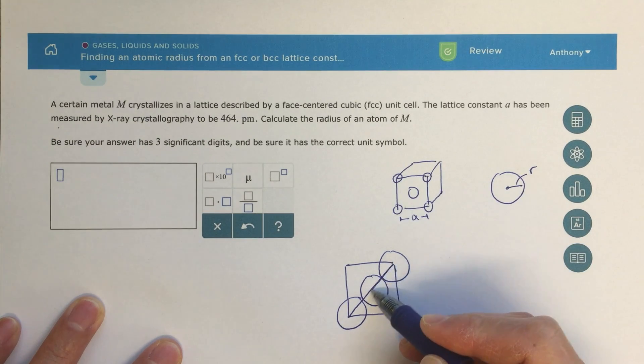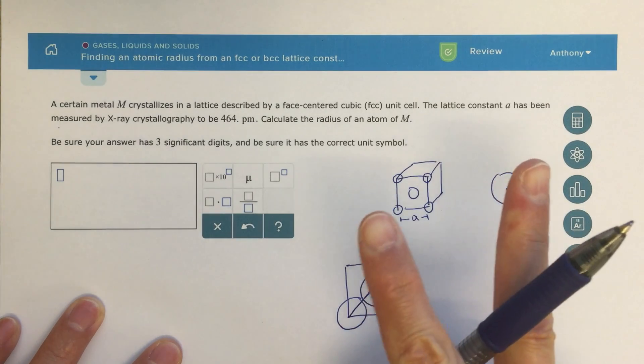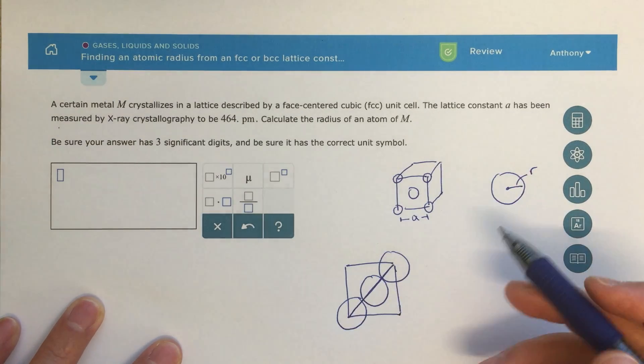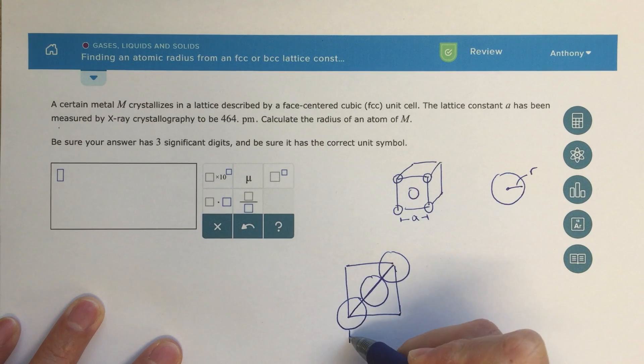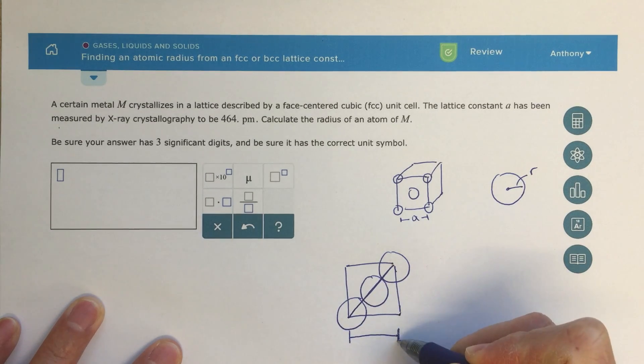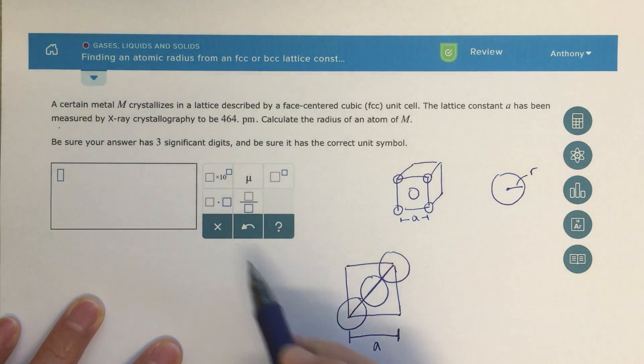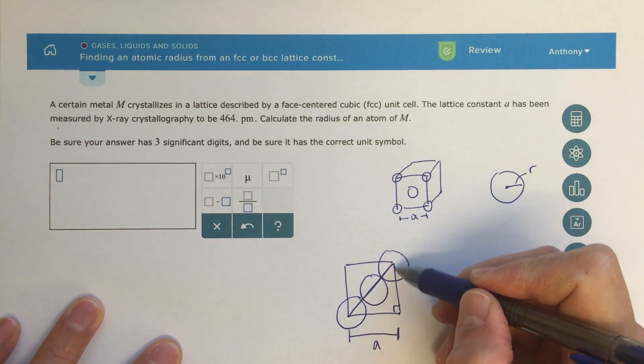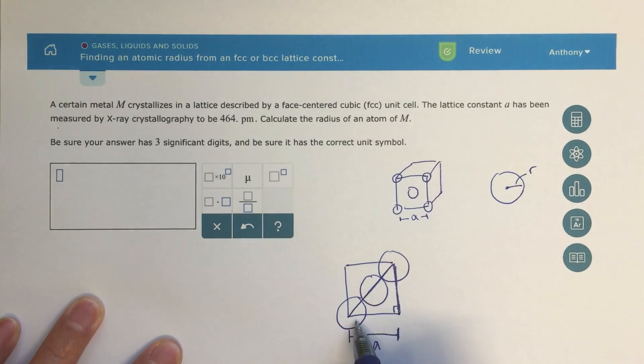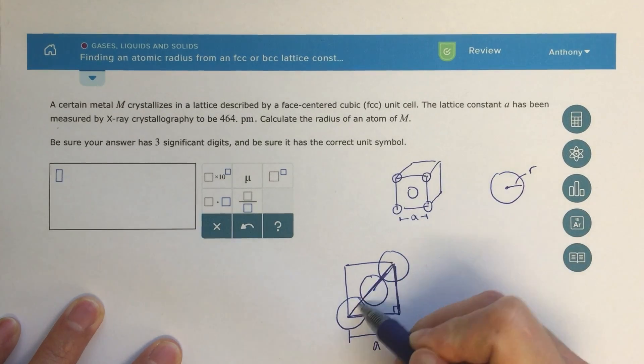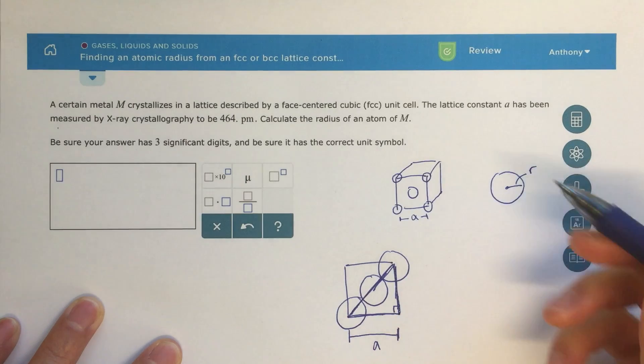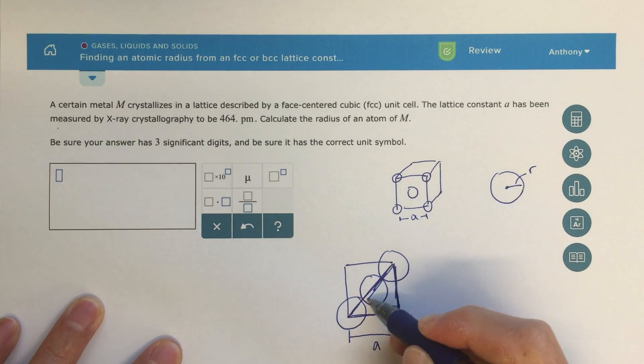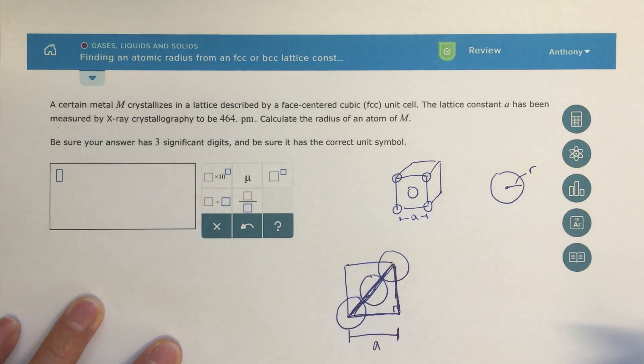This line is essentially going through two of the atoms, and I know this distance here is my alpha distance, 464 picometers, and here I've got a right triangle. This is what we're going to call a right triangle, and if I want to find the distance for this hypotenuse.